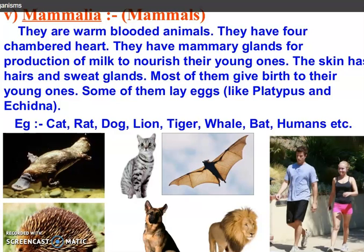Now come to the last class, Mammalia. They are warm-blooded and have a four-chambered heart. They have mammary glands for the production of milk to nourish their young ones. Their skin has hair and sweat glands. Most of them give birth to their young ones, but some lay eggs like platypus and echidna. For example, cat, rat, dog, lion, tiger, whale, bat, and human beings. This is the last class which comes under phylum Vertebrata.